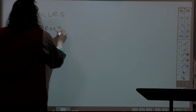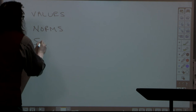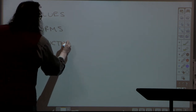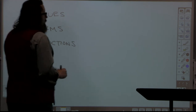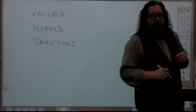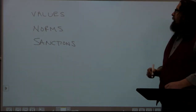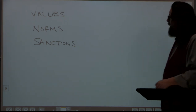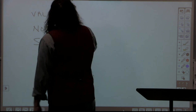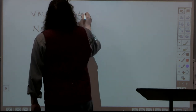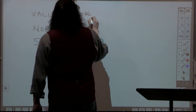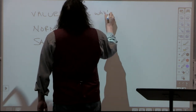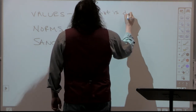Continuing on, three very important things we talk about in symbolic culture are values, norms, and sanctions. We'll go into much more detail about these — especially values — in the next segment, but let's go through the definitions now. Values are ideas that people have about what is desirable.